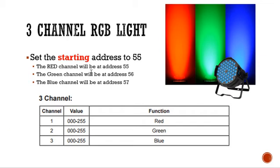The green channel will be at the next available address, 56. If the controller talks to DMX address 56 and gives a value of 128, the green channel will be at half brightness. The blue channel will be at address 57. So now we have three different addresses that we control — three different channels of this one fixture.